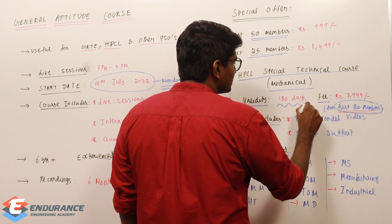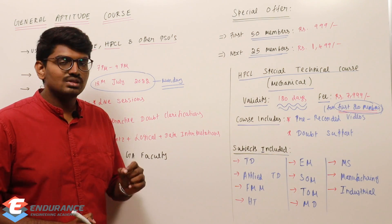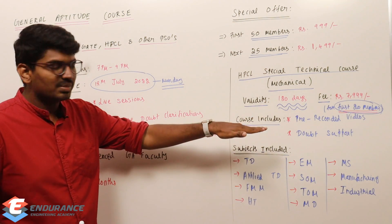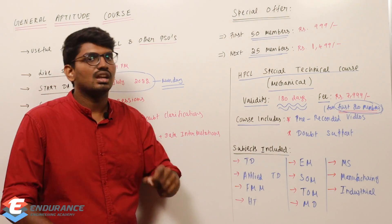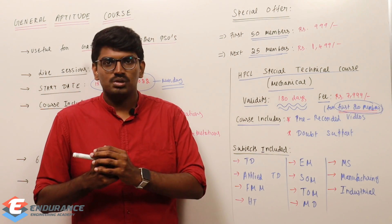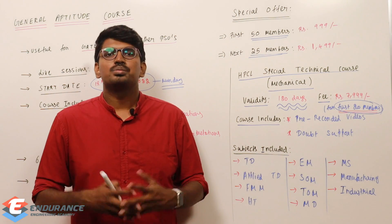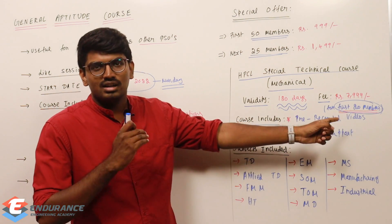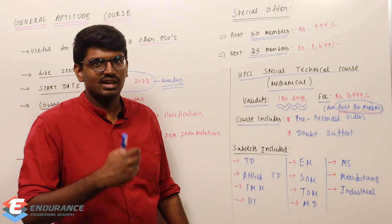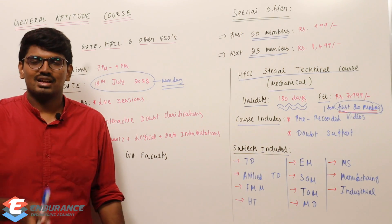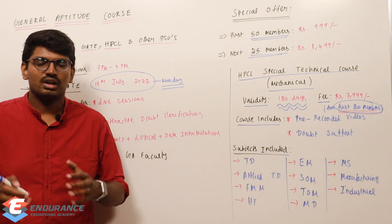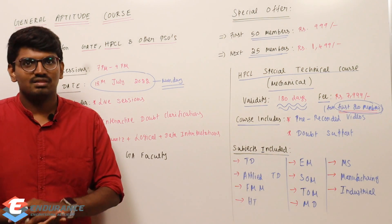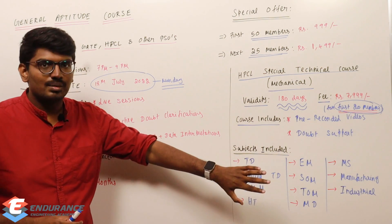The validity of the technical course is 120 days, that is four months. The course is pre-recorded, not live. Demo videos are available in the description. Along with the pre-recorded videos, doubt support is provided — you can ask doubts in our portal or Telegram group and they will be clarified personally. The special price for the technical course is ₹7999 for the first 20 members, after which the fee will be revised. Note that the technical course does not include general aptitude or mathematics — those must be registered for separately.